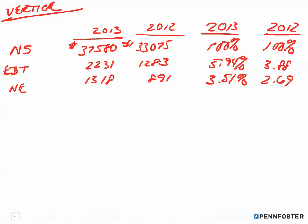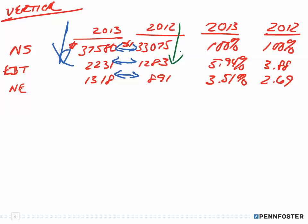Hopefully seeing both done gives you a feel for horizontal versus vertical. In the horizontal analysis, we were making comparisons between years. In the vertical analysis, we kept everything within the same year. Hopefully that gives a better understanding of the difference between the two formats. See you in the next problem.